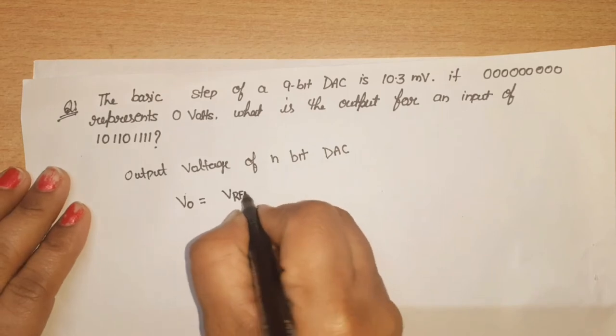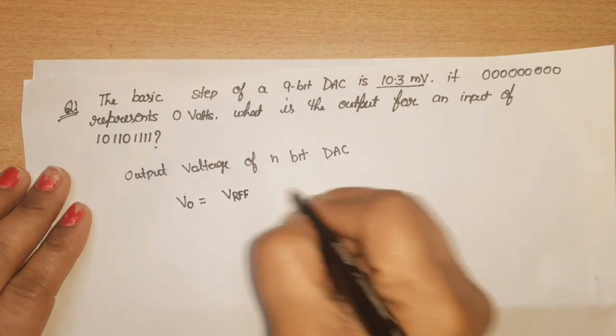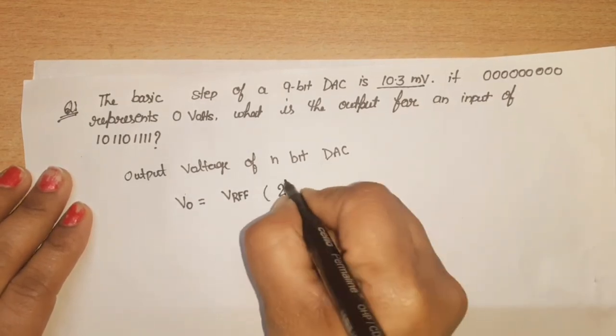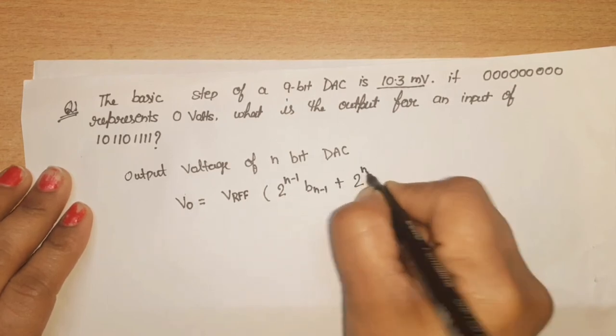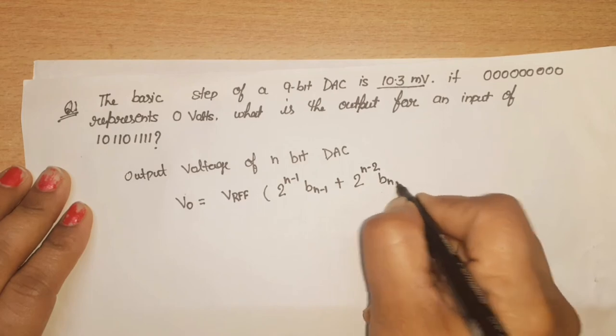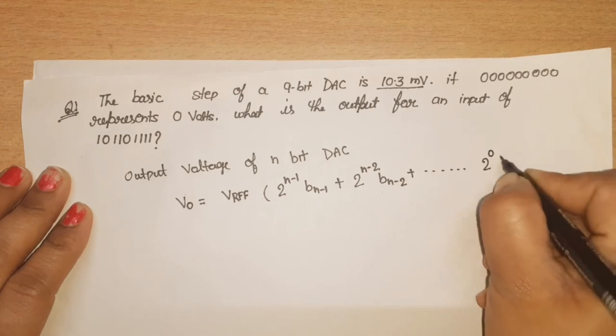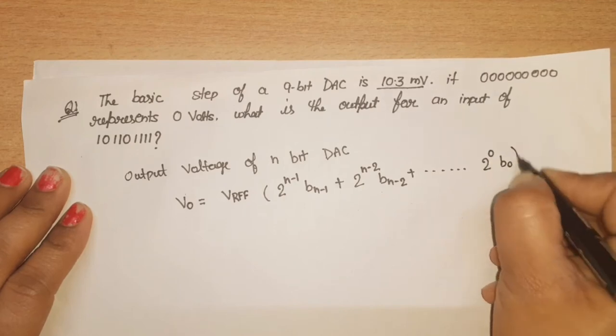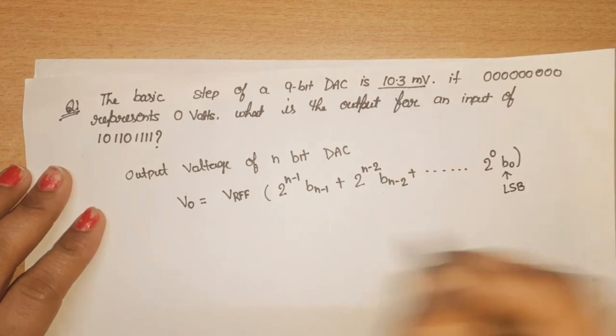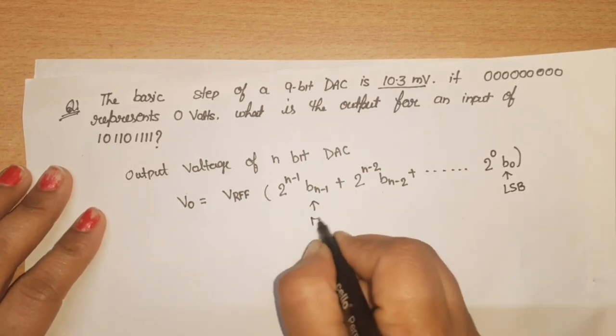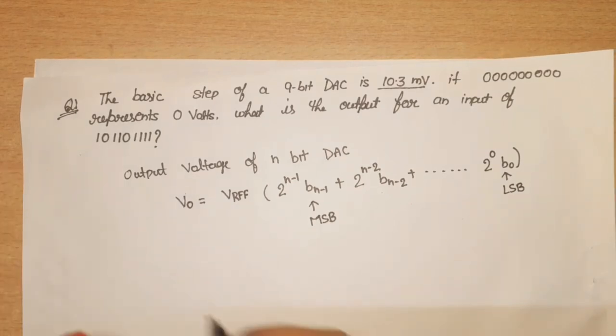So V0, means Vout, is equal to V reference times 2 to the power n-1 times b n-1, plus 2 to the power n-2 times b n-2, and so on, up to 2 to the power 0 times b0. This is the LSB bit and b n-1 is your MSB bit. We will use this formula now in our question.